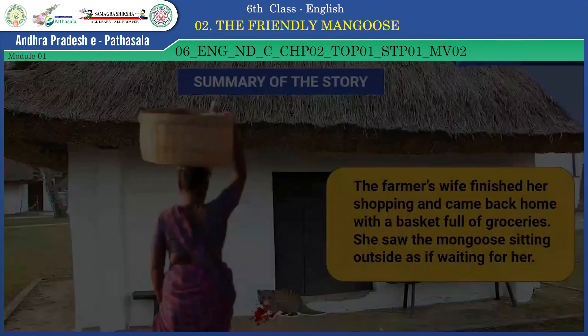Now, children, do you like this story? We will have a short comprehension check. Read the questions and answer them. Assessment Question number one: Why did the farmer bring a baby mongoose into the house? Option A: He likes mongoose. Option B: To be a friend to their son. Option C: To kill snakes. Option D: To play with it. The right answer is B — to be a friend to their son.